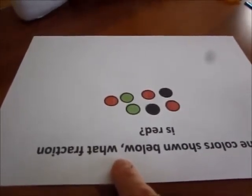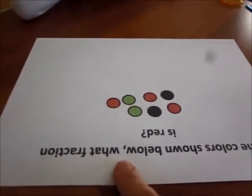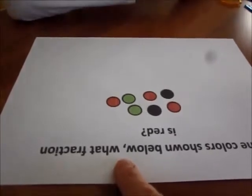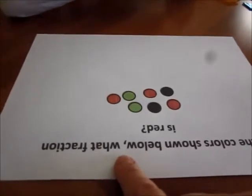Well, three-sevenths is the fraction of red circles among all the circles. This time I'm interested in knowing what fraction of the colors is red.